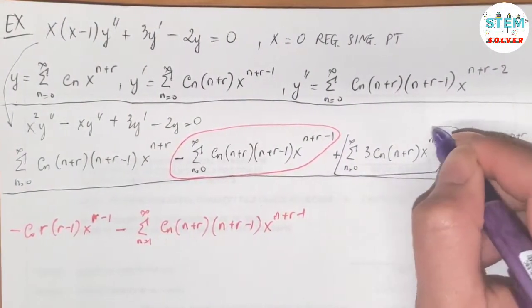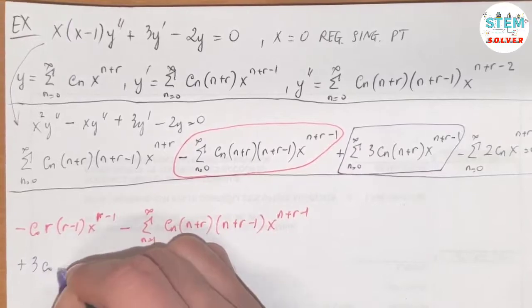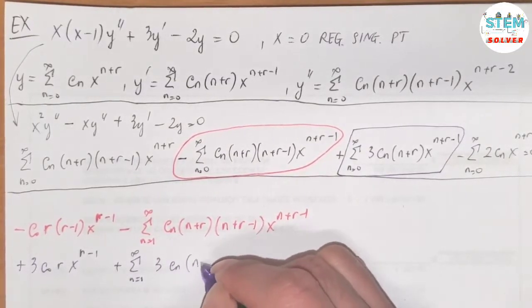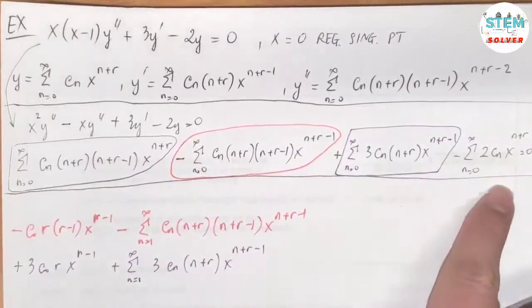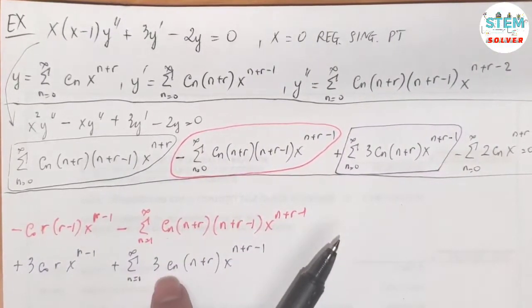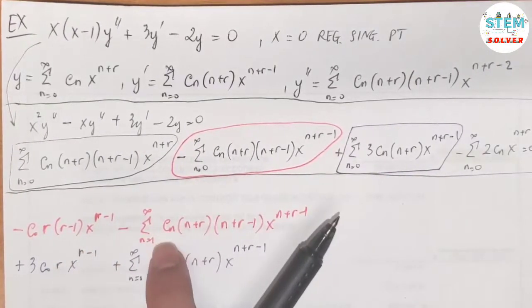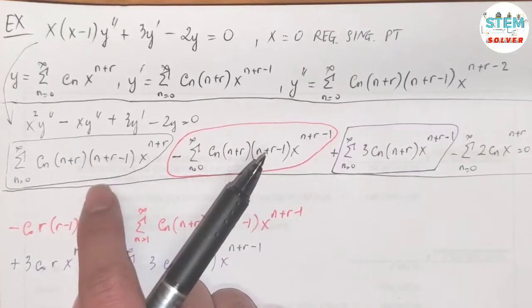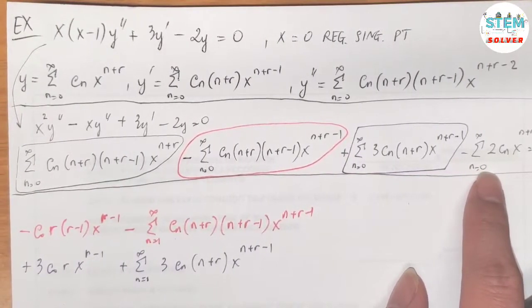For the third series, we do the same: when n equals 0, we have 3c_0 times r times x to the r minus 1, plus the series from 1 to infinity of 3c_n(n plus r) times x to the n plus r minus 1. For the first and fourth series, we need to rewrite them to get x to the r. I looked one step ahead and saw I need n equals 1, so I leave the n equals 0 term blank, ignore it at first, and reduce the starting index to 1 to match the others.